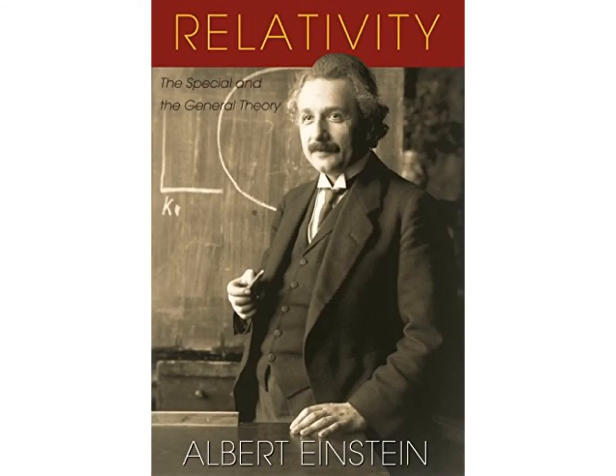In this series of videos, we will step through Einstein's arguments on just how he believed these hypotheses could not be reconciled and how, as a result, he adopted the Lorentz transformation and constructed the special theory of relativity. Einstein's discussions are developed in his book, Relativity: The Special and the General Theory. Throughout this series, I will utilize quotes from the edition published in 1916.